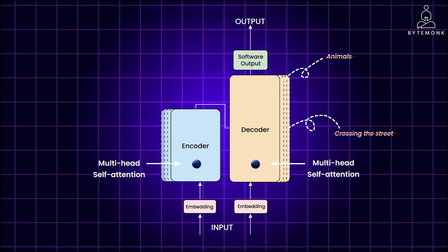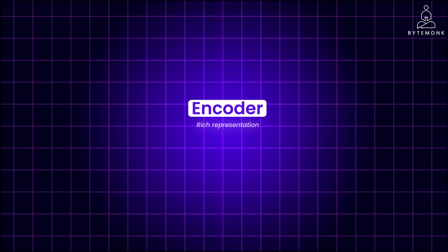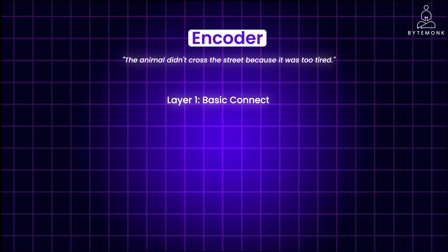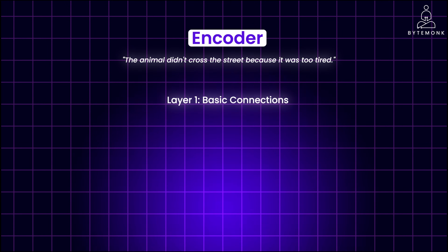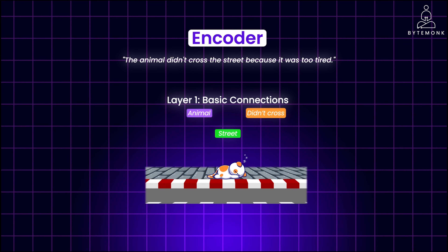The attention mechanism is within the encoder-decoder module and plays a crucial role in both. The encoder's job is to create a rich representation of the input sentence — a deep analysis of how words relate to each other. For example, in layer 1, it might first understand basic connections: 'animal' is the subject of 'did not cross,' 'street' is what the animal didn't cross, and 'tired' describes 'it.' In layer 2, it gets a deeper understanding, recognizing that 'it' likely refers to 'animal,' and that 'didn't cross' and 'tired' are connected.